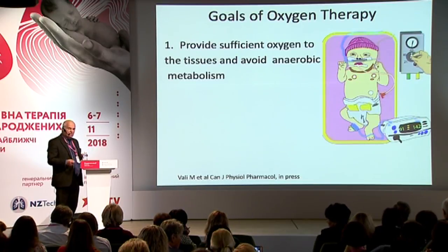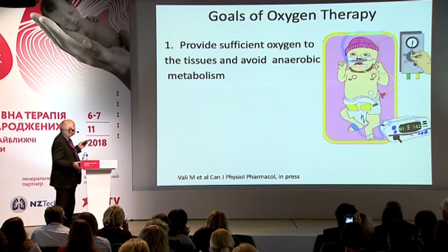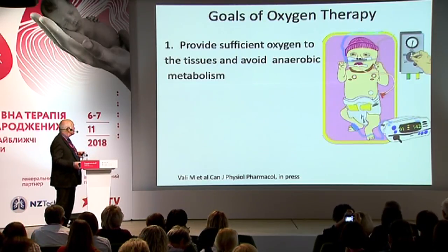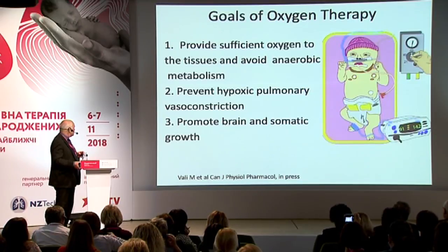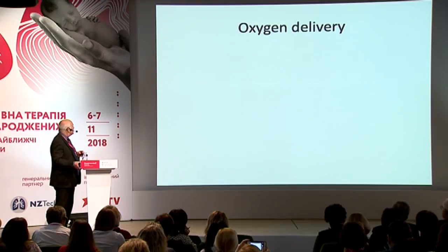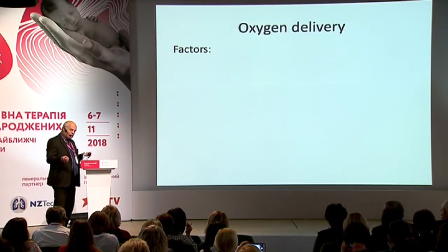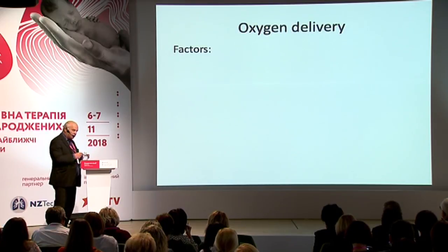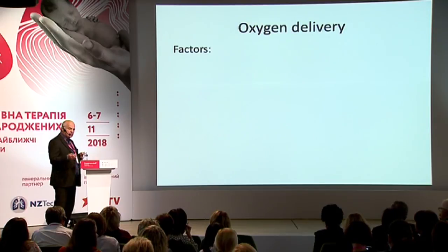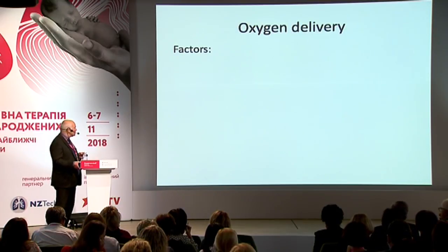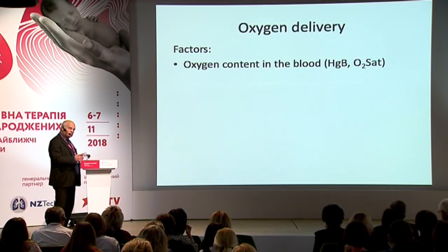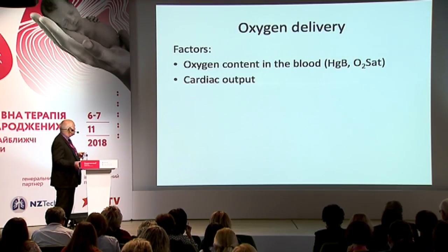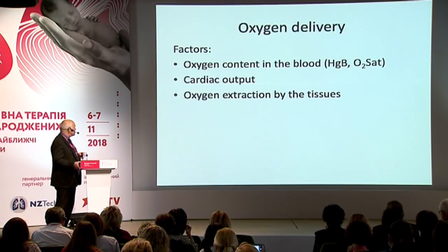What is the goal of oxygen therapy? First of all, it's to provide sufficient oxygen to the tissues and to avoid anaerobic metabolism, to prevent hypoxic pulmonary vasoconstriction, and to promote brain and somatic growth. What we would like to measure is probably oxygen delivery. We cannot do that, so we're measuring oxygen tension, PO2, or saturation. The factors of importance for oxygen delivery are the oxygen content in the blood, dependent on hemoglobin value and oxygen saturation, cardiac output, and oxygen extraction by the tissues.